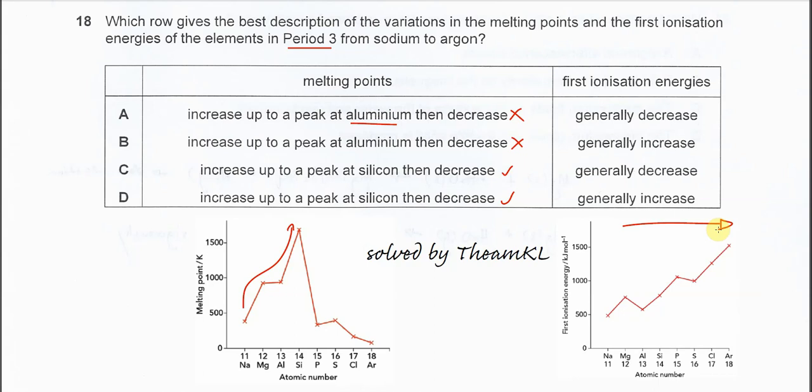Therefore the electrons are harder to remove across the period, and it is generally increased, means it needs more energy to release the electrons.